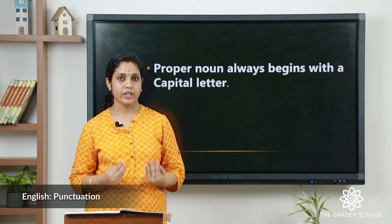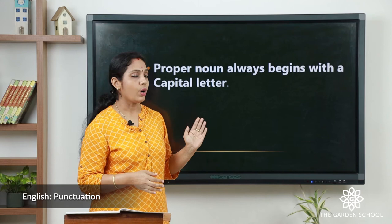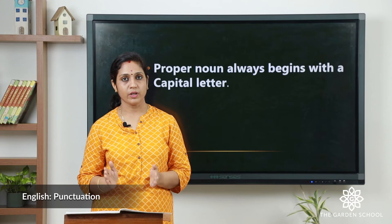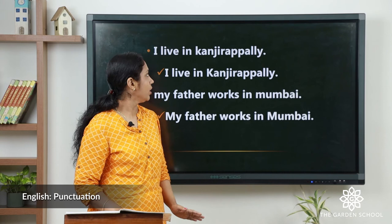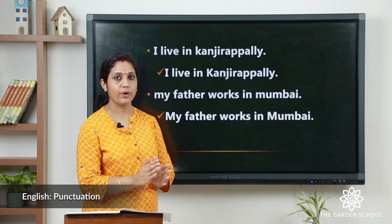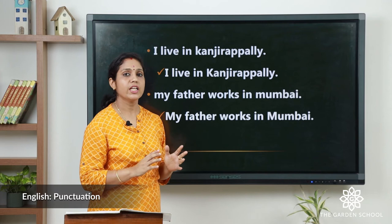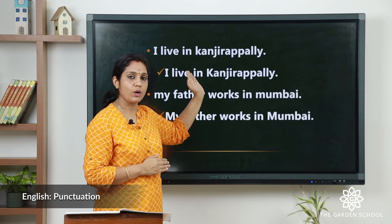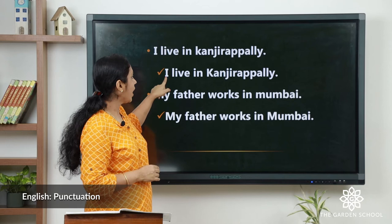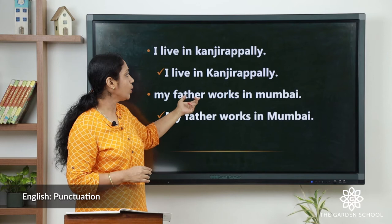We have already learned what a proper noun is — it refers to a particular person or place. A proper noun always begins with a capital letter. Even if it comes in between the sentence, we have to write it in a capital letter. For example: 'I live in Kanyarapalli.' Kanyarapalli is a place — it's a proper noun. Even though it comes in between the sentence, we have to write the first letter 'K' in a capital letter.